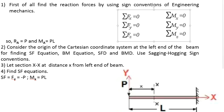Using engineering mechanics, we equate forces in the x-direction equal to zero and moment at point x equal to zero. The sign convention used here is: clockwise moment is taken as negative and anti-clockwise moment as positive. Once we have obtained RA and MA, we move to step two: consider the origin of the Cartesian coordinate system at the left end of the beam, and find the shear force and bending moment equations.